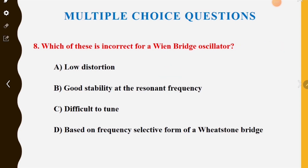Next MCQ: which of these is incorrect for the Wien bridge oscillator? Option A is low distortion, Option B is good stability at resonant frequency, Option C is difficult to tune, Option D is based on a frequency selective form of a Wheatstone bridge.